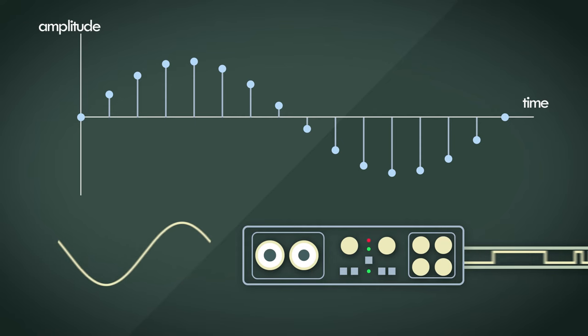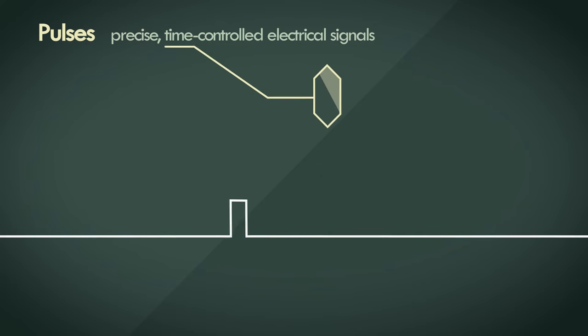We could make use of pulses. Pulses are precise time controlled electrical signals. The timing of these electrical pulses are controlled by a very accurate clock, usually a precisely cut piezoelectric crystal. These pulses can be modulated according to the amplitude value of each sampling interval.